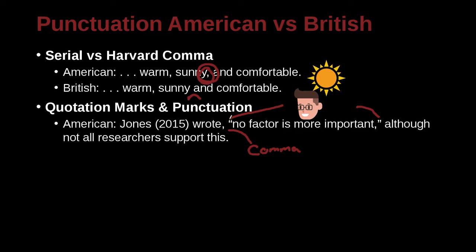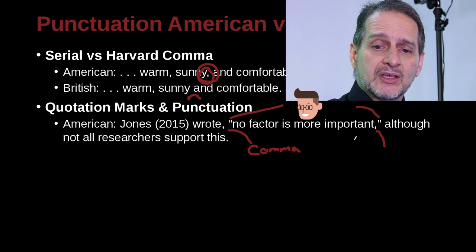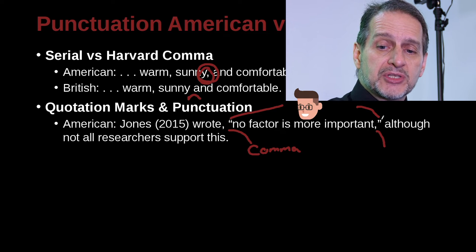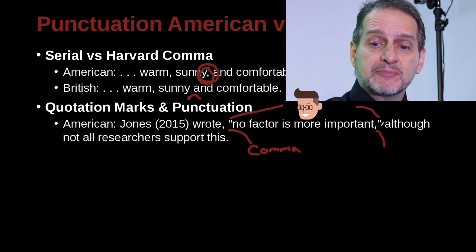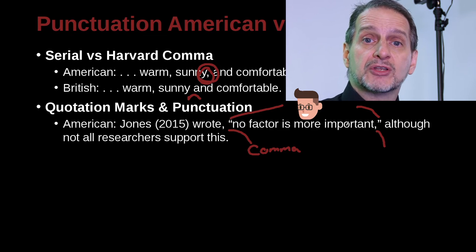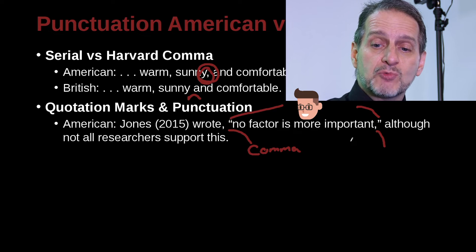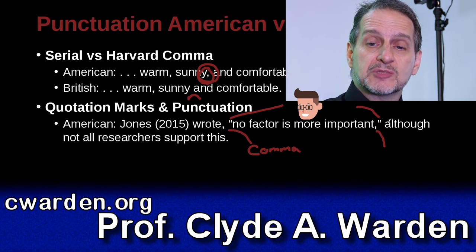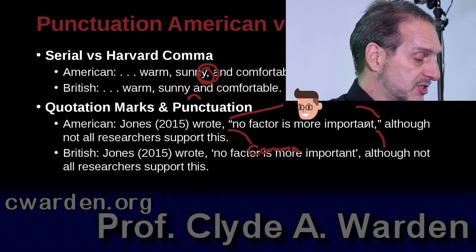What did he write? We have the quotation here, and then we have my writing: 'although not all researchers support this.' He did not say this — I said this. The key point here is that the comma at the end is going to be included on the inside of the quotation mark. Inside the quotation, please take note: there is no space before the comma, and no space after the comma where it is right up against a quotation mark, because quotation marks have no space before them. There is one space after, though, just before the word 'although.' We'll be looking at more examples as we move on.